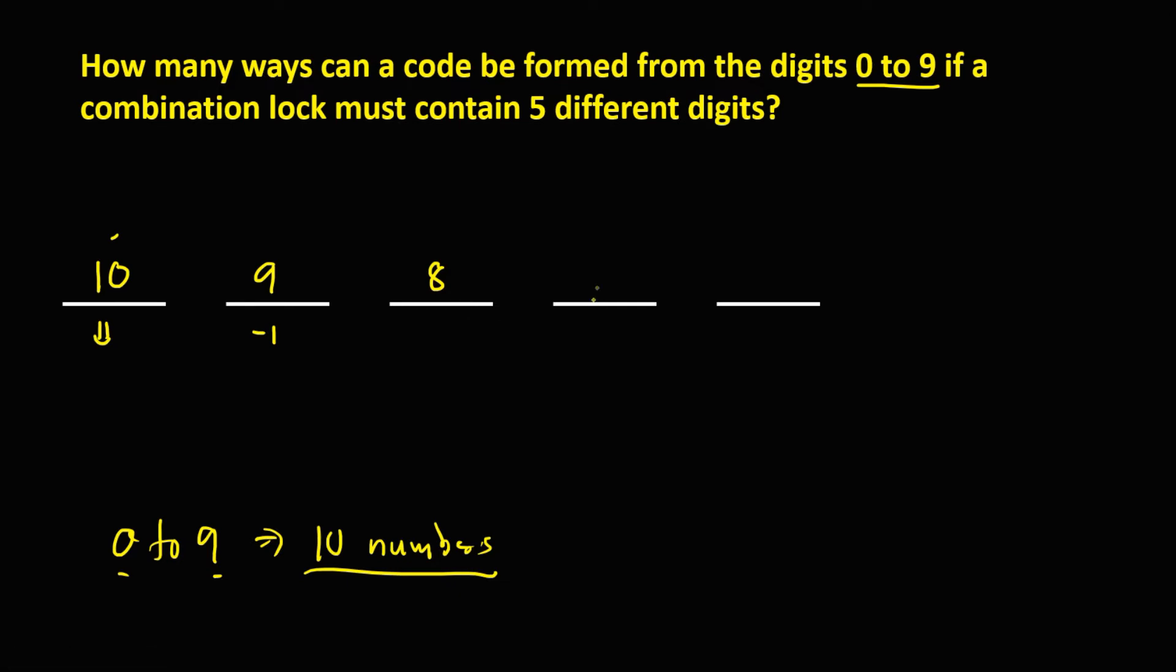And for the fourth code, that's 7 possible numbers. And for the fifth code, that's 6 possible numbers. So to find the total combination, just multiply all these numbers.